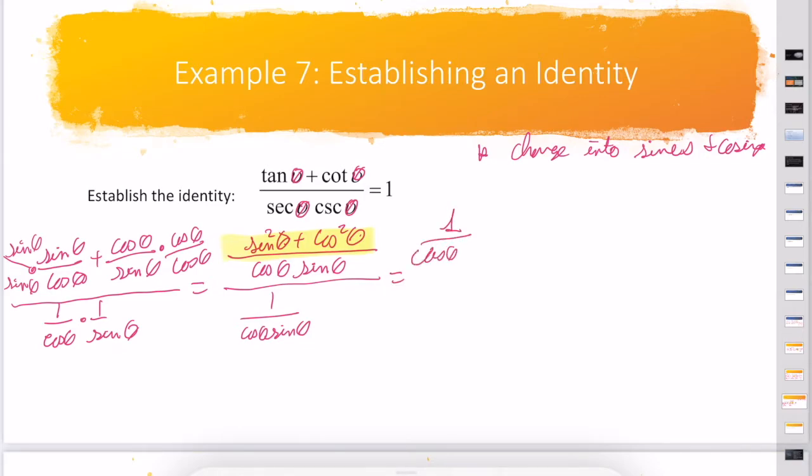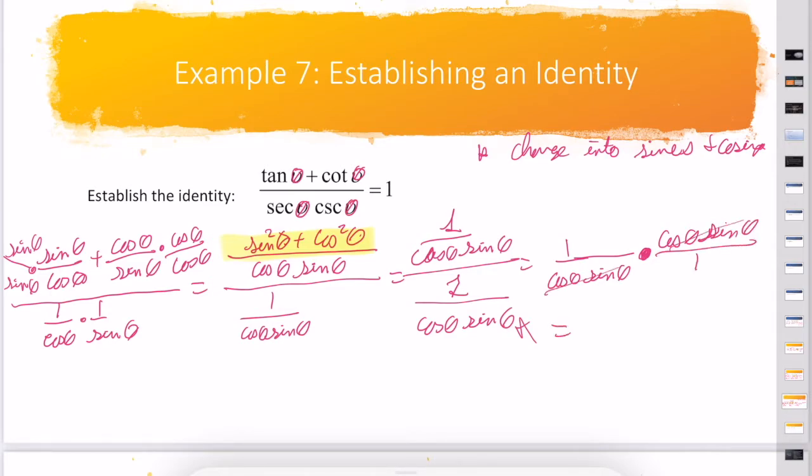I have 1 over cos θ sin θ divided by 1 over cos θ sin θ, so I keep my first fraction the same, I change from division to multiplication, and I flip the second fraction. I'm left with just 1, because everything cancels out, which is exactly what I was hoping to find.